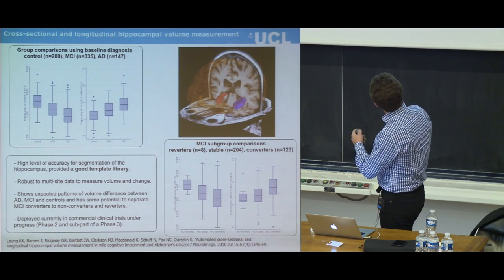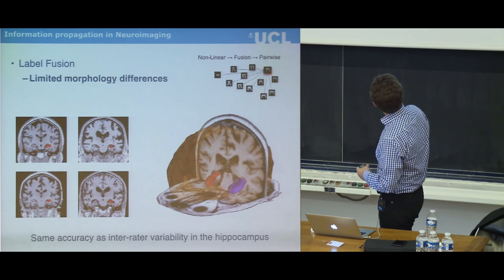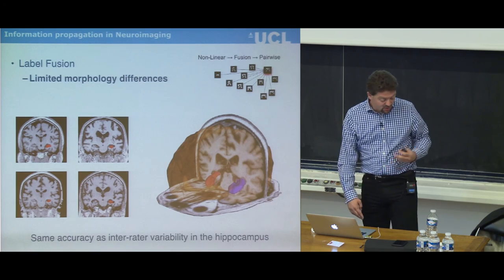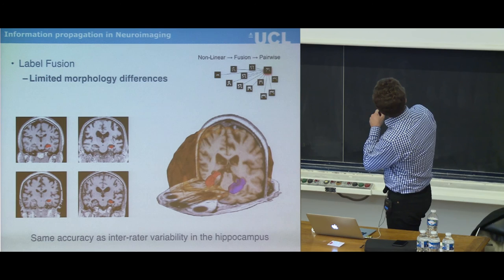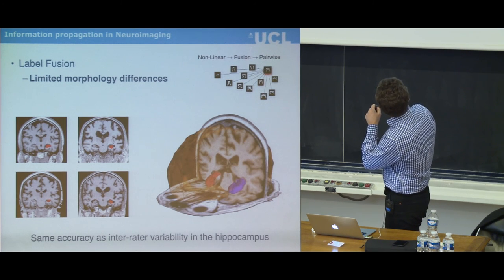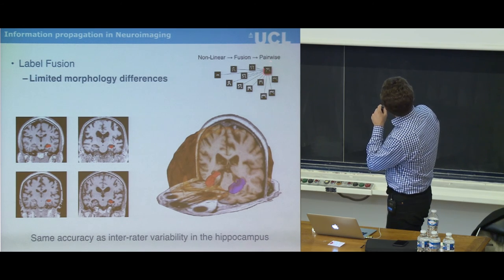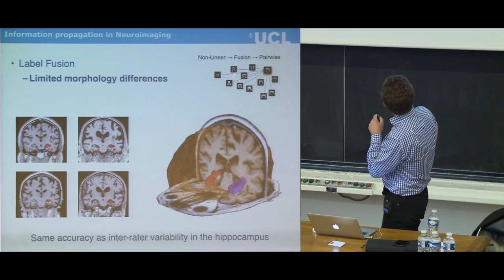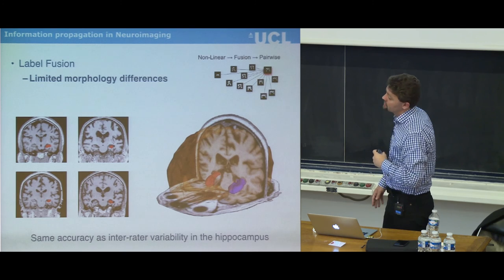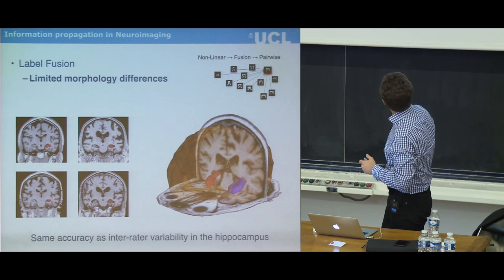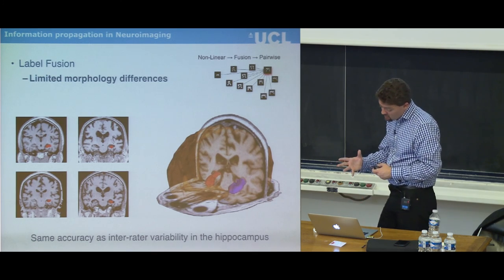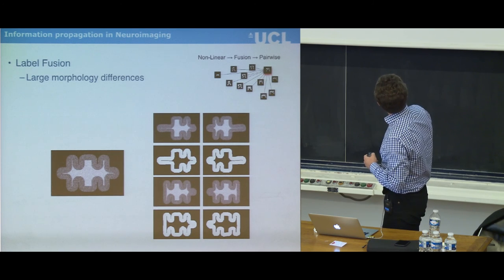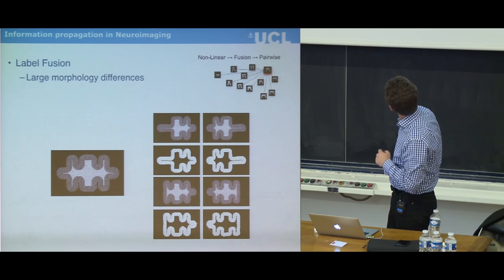The challenge with standard label propagation algorithms is they can be biased by large morphological differences. If your templates have much more variability than the patient image — for instance ventricle size differences between Alzheimer's patients and 20-year-old atlas templates — this drives registration error and results in missed segmentation. Rather than using global correlation between templates, you can use local correlation to selectively keep only the parts of each template that are locally similar to the patient, discarding dissimilar regions. This provides a more reasonable segmentation.